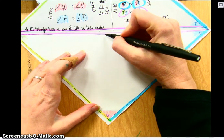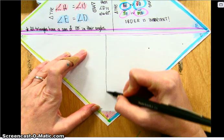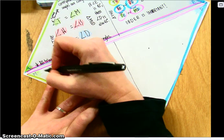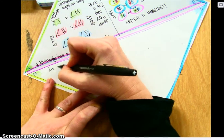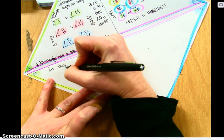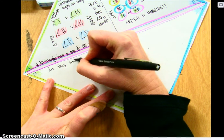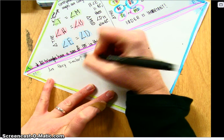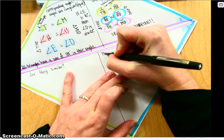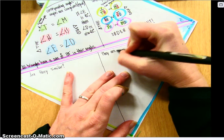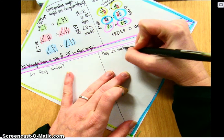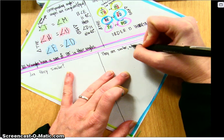So the two questions that you will typically see from this would be, are these figures similar figures? Or you will be given a statement that says they are similar. What are the missing measures?